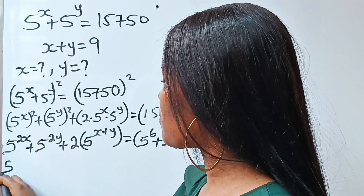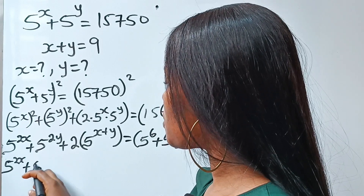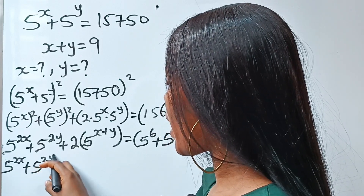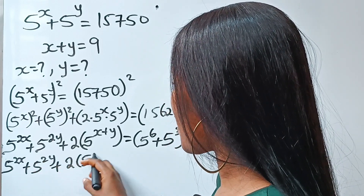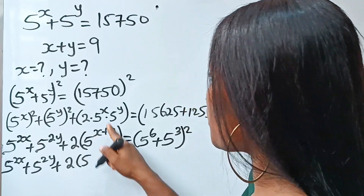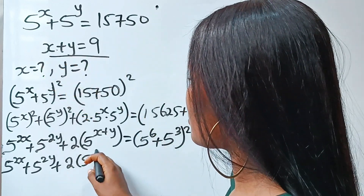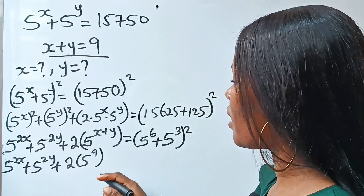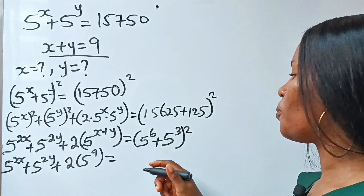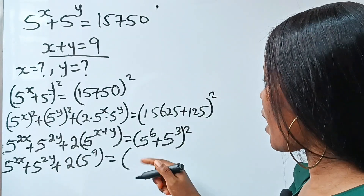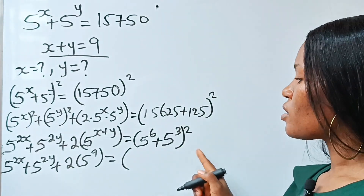So we have 5 to the power of 2x plus 5 to the power of 2y plus 2 multiplied by 5 to the power of 9 — because x plus y is 9 — is equal to... and we have an a plus b squared form here again.